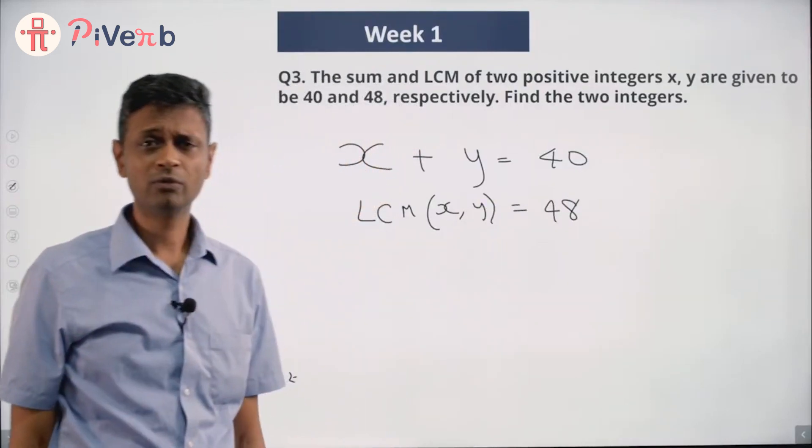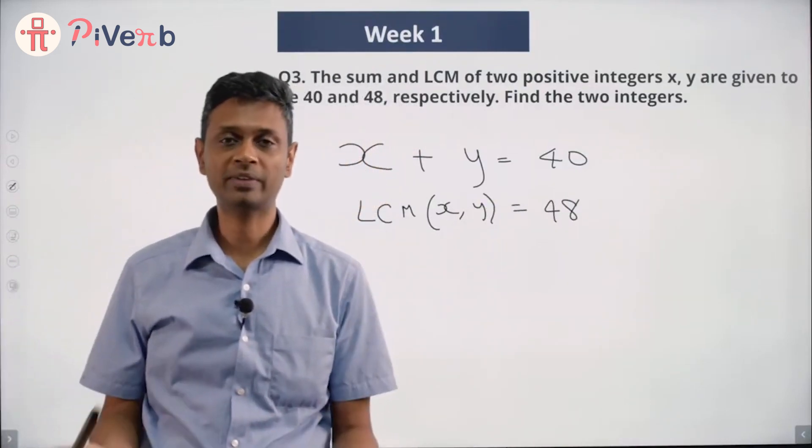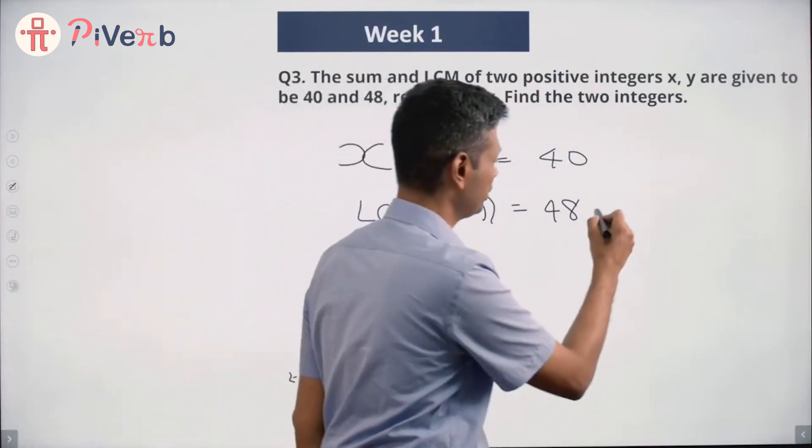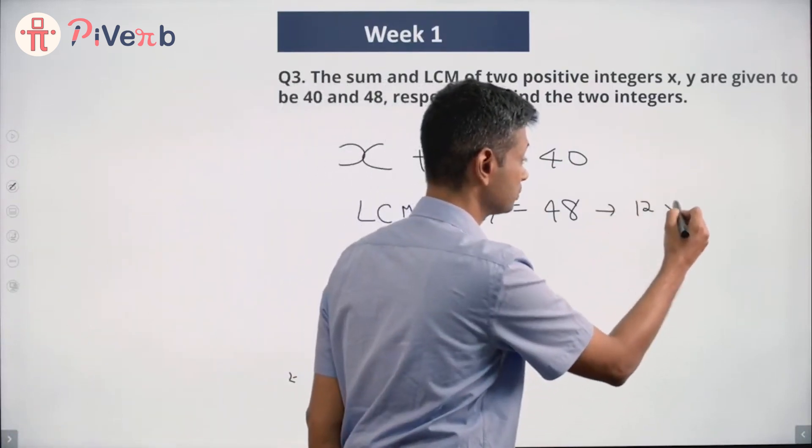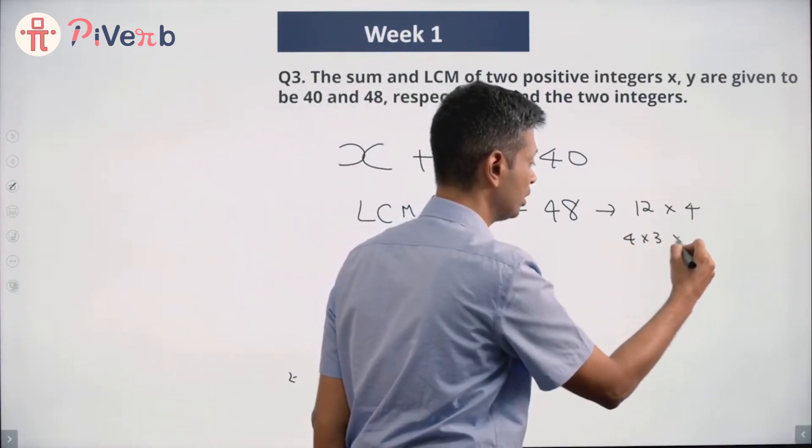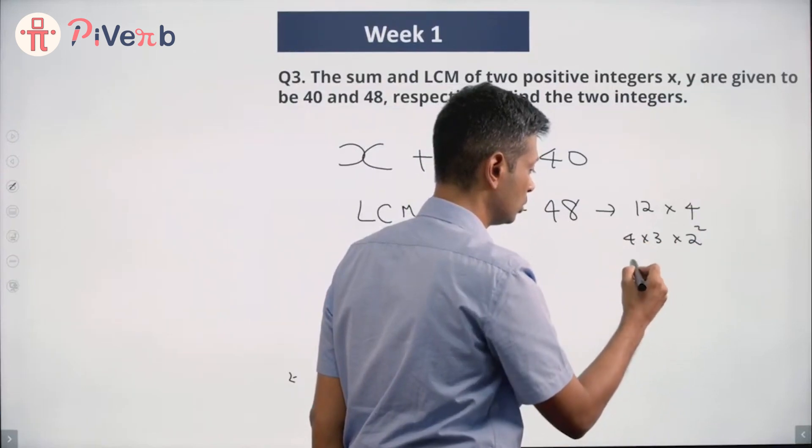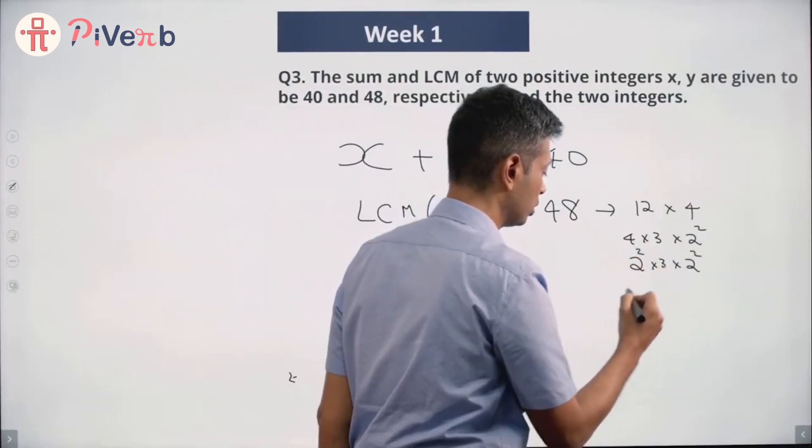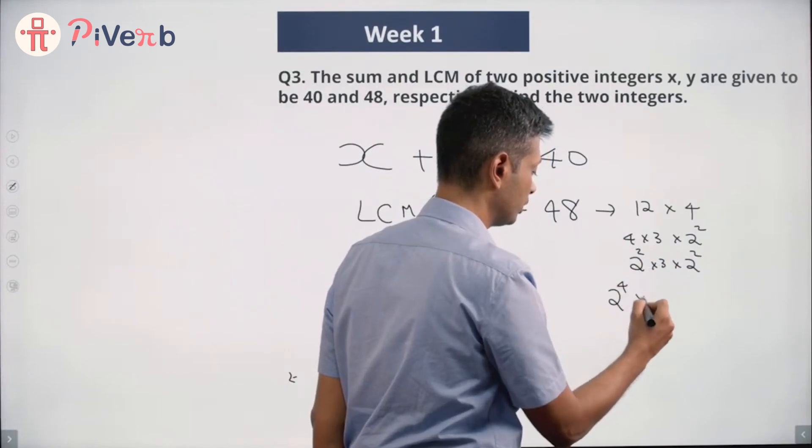Several of these questions will usually start with prime factorization, so let's prime factorize 48. 48 can be written as 12 into 4, which is 4 into 3 into 4, or 2 squared into 3 into 2 squared, giving us 2 to the power 4 into 3.